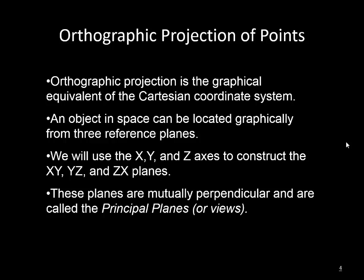Our three main planes we refer to as principal planes. If I have a box, I've got the front plane, the right side, the left side — which we call profiles — the rear of the box, the bottom, and the top — which we call horizontal planes. Those are our six principal planes. Today we will really be focusing on three of these planes. Not everything can be described with those planes, and we'll get into auxiliary views next time.